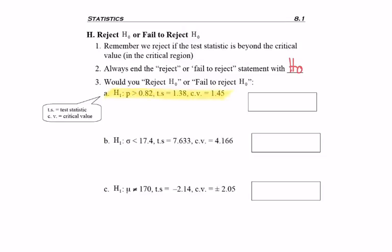Okay, so here is my first problem, where I'm using TS to stand for test statistic, and CV to stand for critical value. So I'm given all the pertinent information I need to decide whether I reject or fail to reject H-naught.